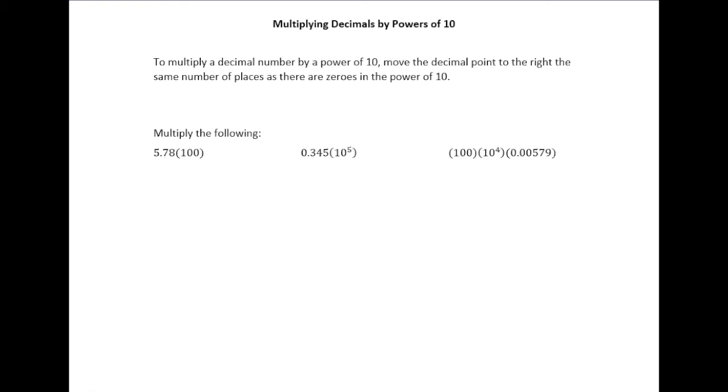We're going to begin this section by talking about how to multiply decimals by powers of 10. Remember, powers of 10 are just numbers that are a 1 followed by any number of zeros.